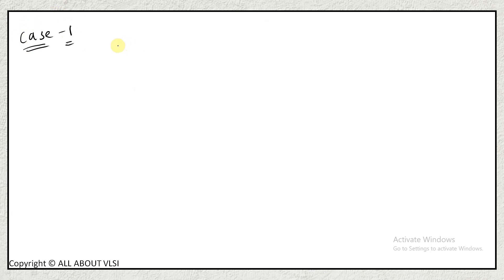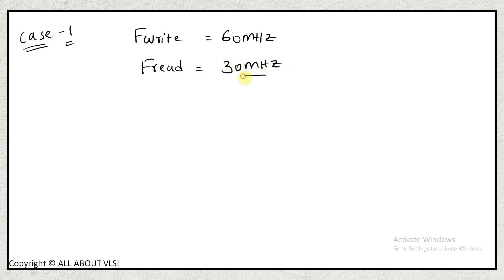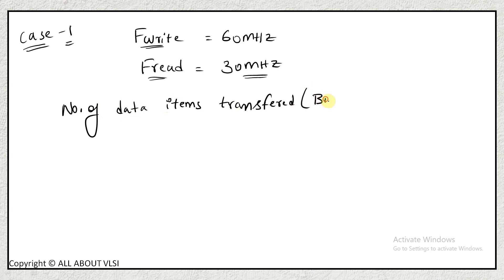Case 1: Write frequency is 60 MHz and read frequency is 30 MHz. Clearly, the writing frequency is greater than the reading frequency, so there will be data loss. The number of data items to be transferred in this burst is B = 120 data items from Module A to Module B, where write frequency is 60 MHz and read frequency is 30 MHz.